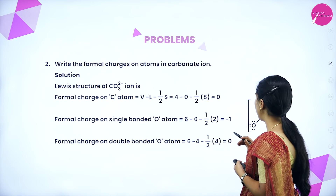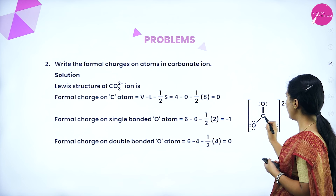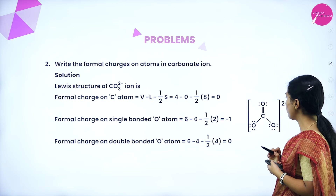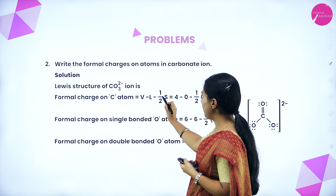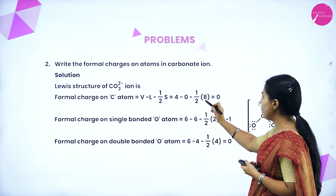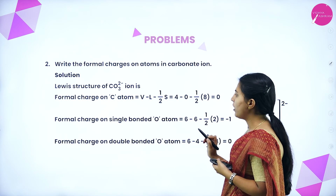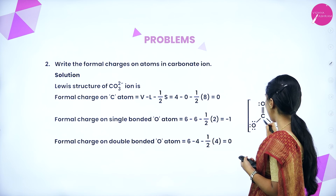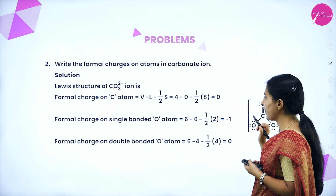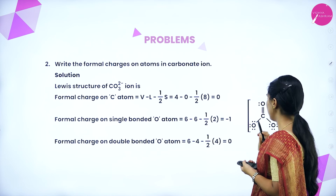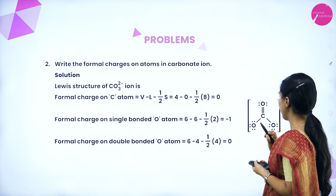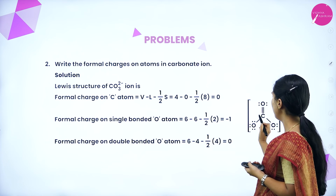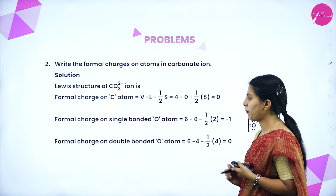Write the formal charges on atoms in carbonate CO₃²⁻. For the carbon atom: V − L − ½S = 4 − 0 − ½ × 8 = 0. For single bonded oxygen: 6 − 4 − ½ × 2 = −1. For double bonded oxygen: 6 − 2 − ½ × 4 = 0. The 2-minus charge means 2 electrons have been added for the structure.